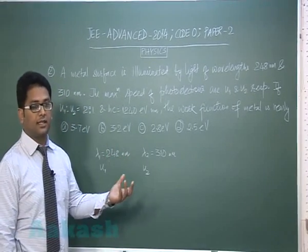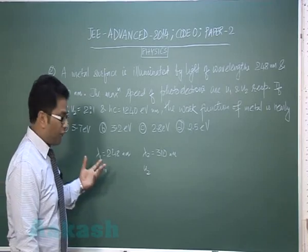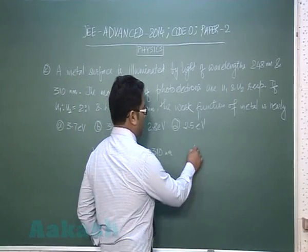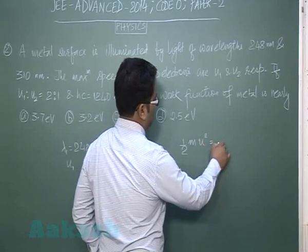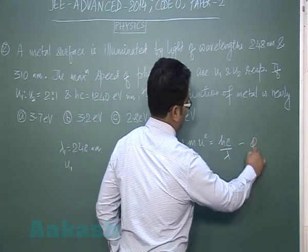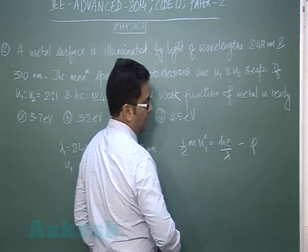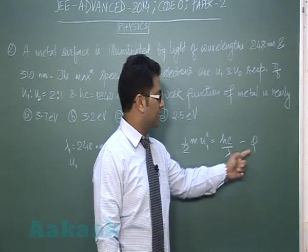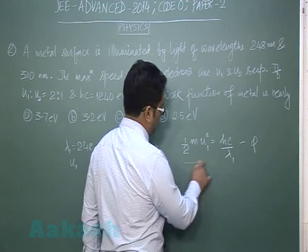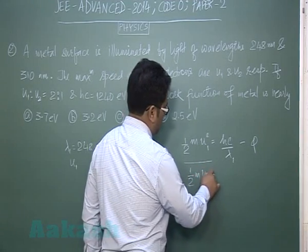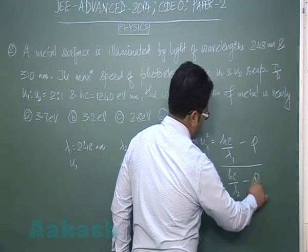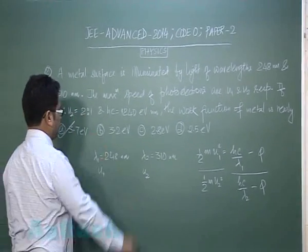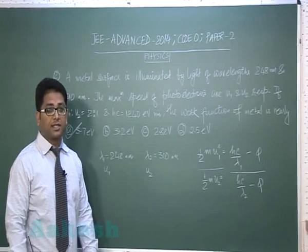The same metal is irradiated by two different lights, so photoelectrons have different velocities. For case one: ½mu1² = hc/lambda_1 - W. For case two: ½mu2² = hc/lambda_2 - W. The work function W is the same for both since it's the same metal. Solving these two equations, you get the work function equal to 3.7 electron volts. Now let's move to question number three.